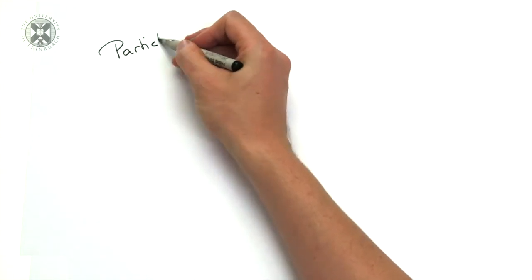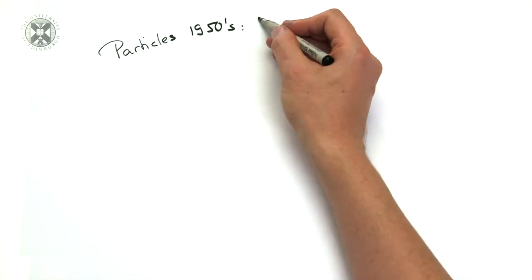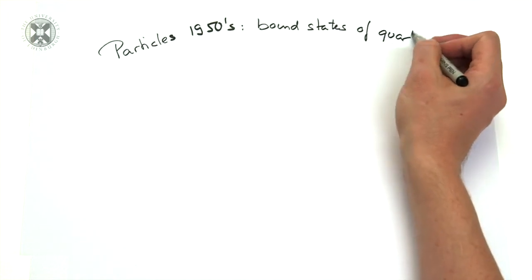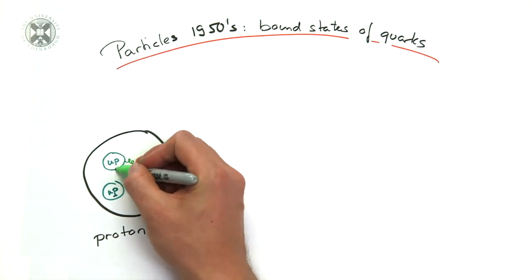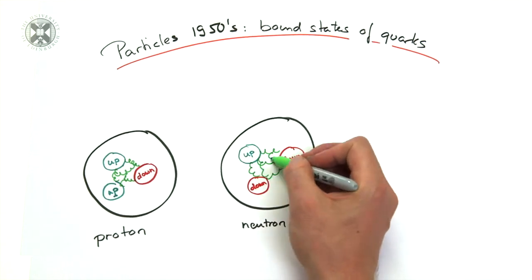It is time to return to the beginning of this lecture and fit the protons and the neutrons back into the new picture. They correspond to up, up, down, and up, down, down bound states.